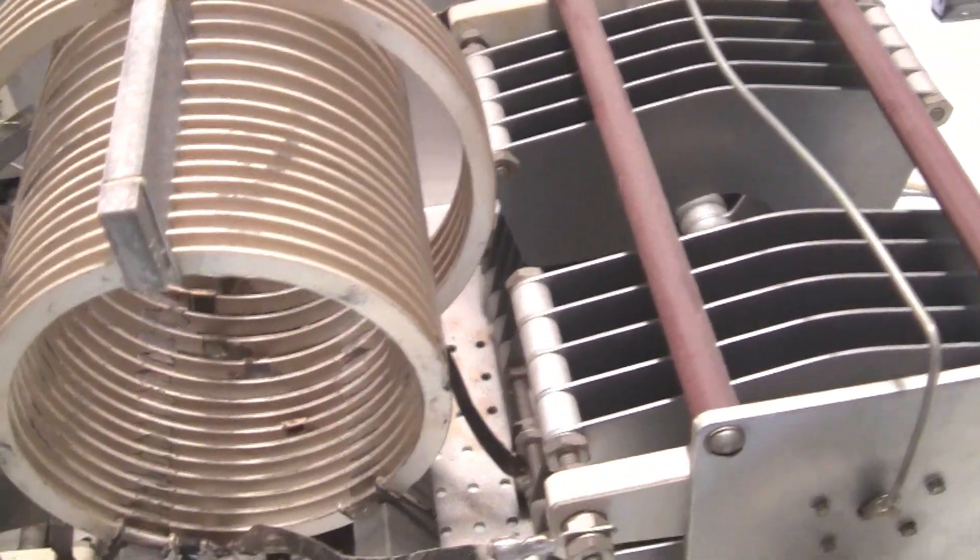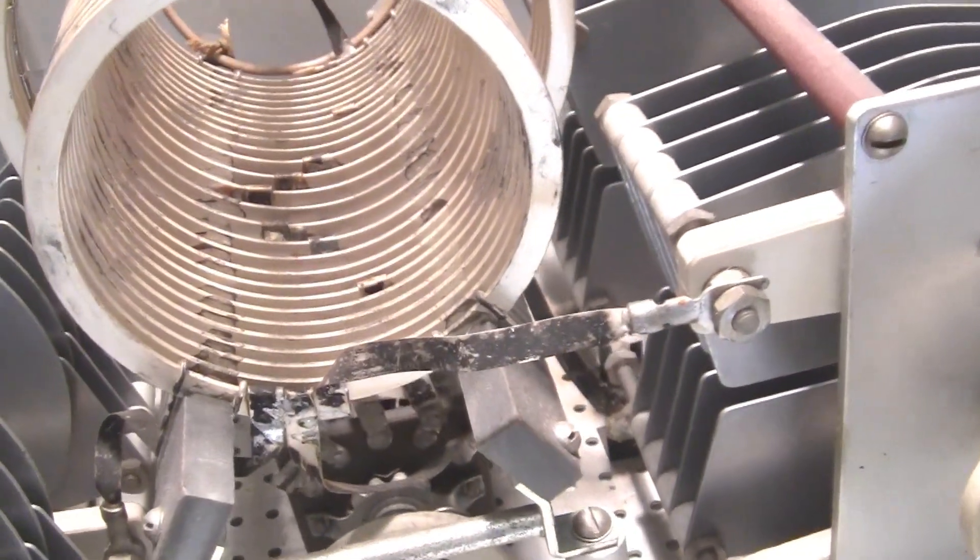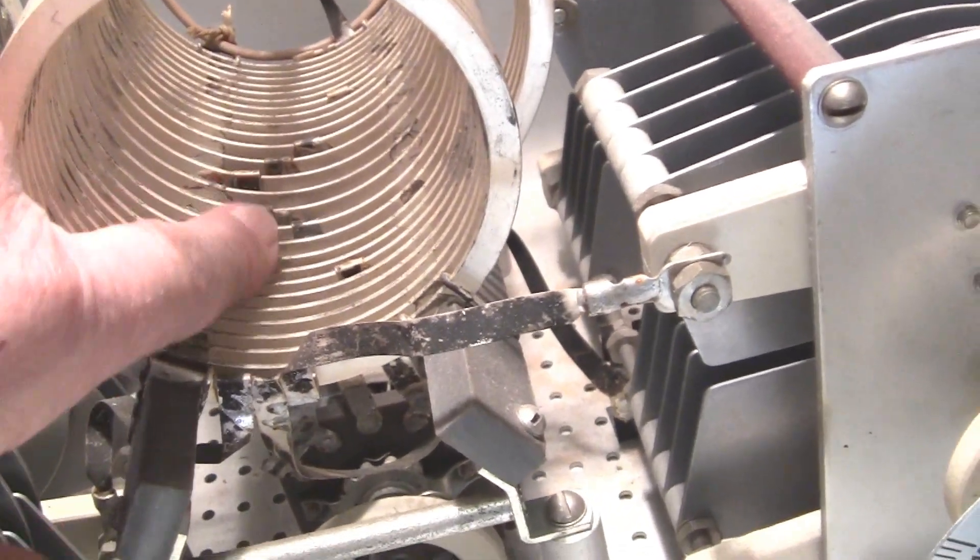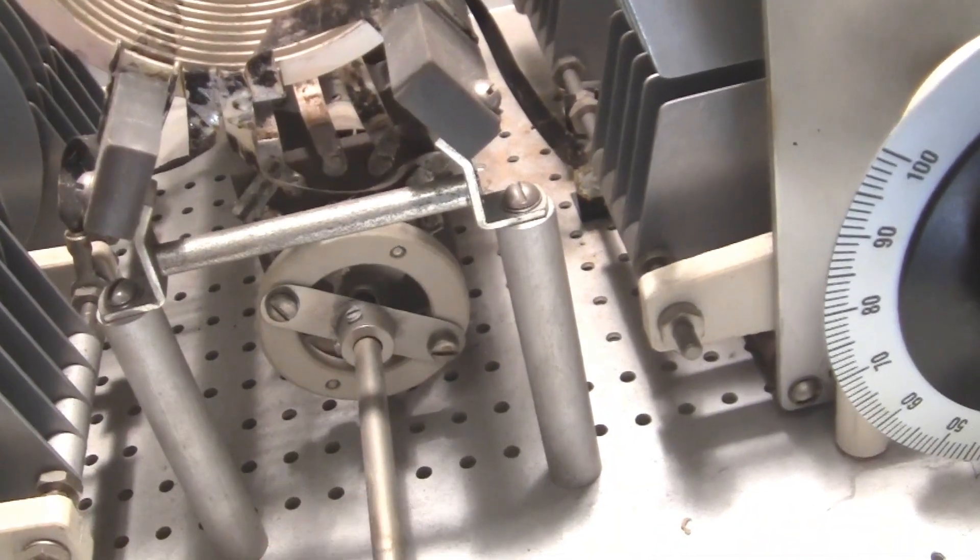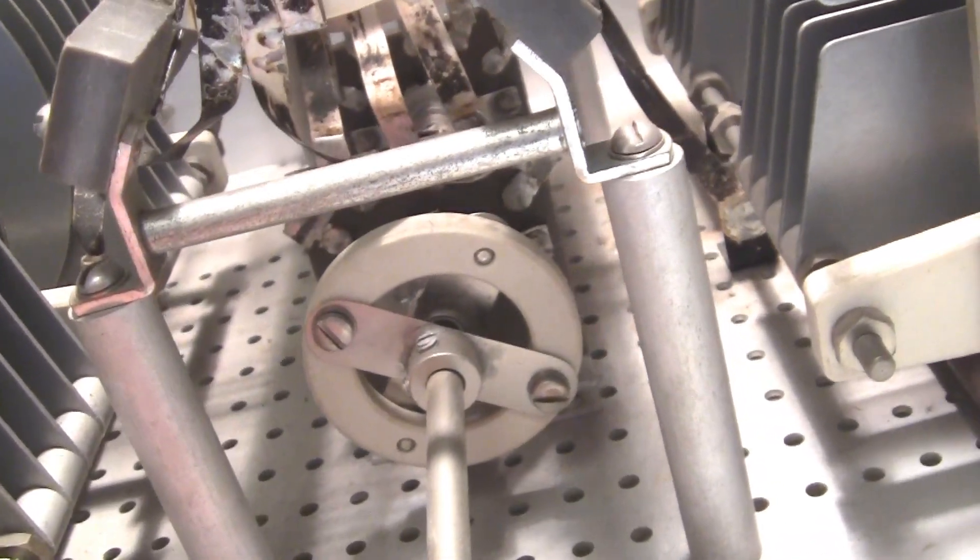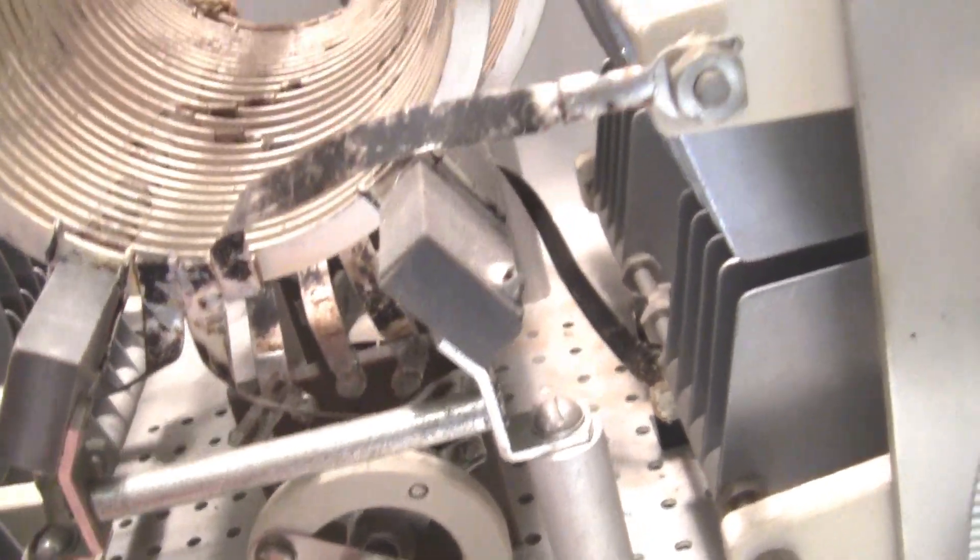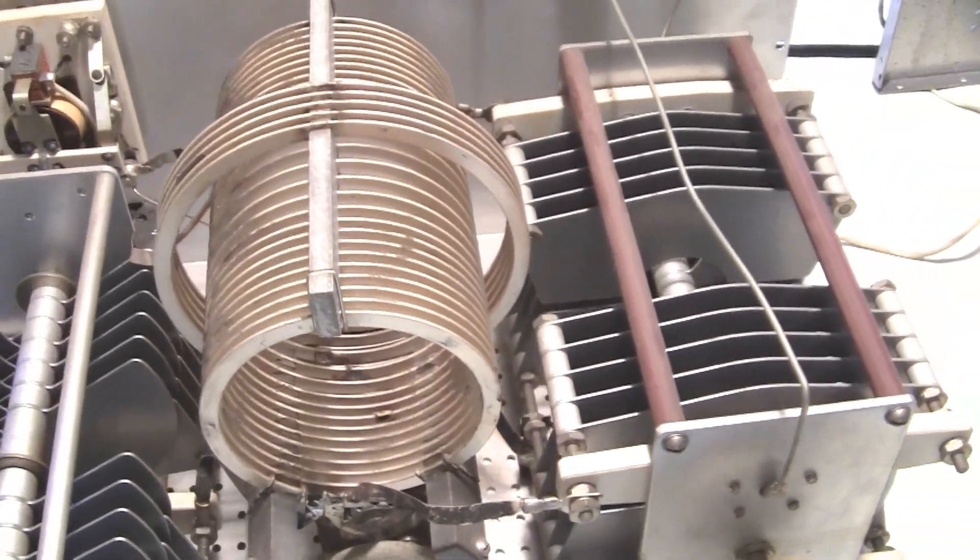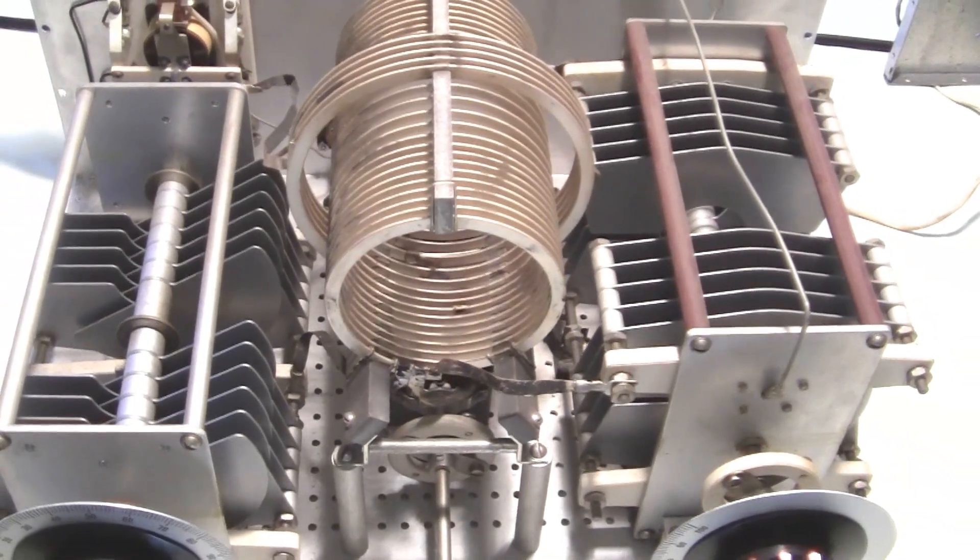Now the big coil, we have a hard time seeing it. But there's a lot of taps down in there. And they're controlled by this band switch. And we can't really get the camera in there too well to see the band switch either. But that switch is between 80 and 10 meters in the various inductors.